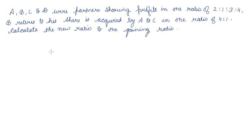A, B, C and D were partners sharing profits in the ratio of 2:1:3:4. B retires. B's share is 1/10, and his share is acquired by A and C.